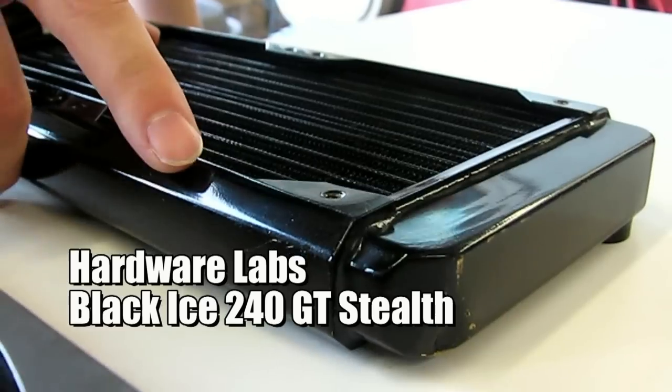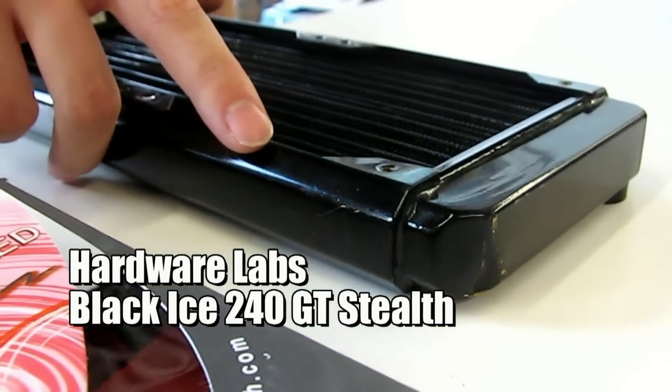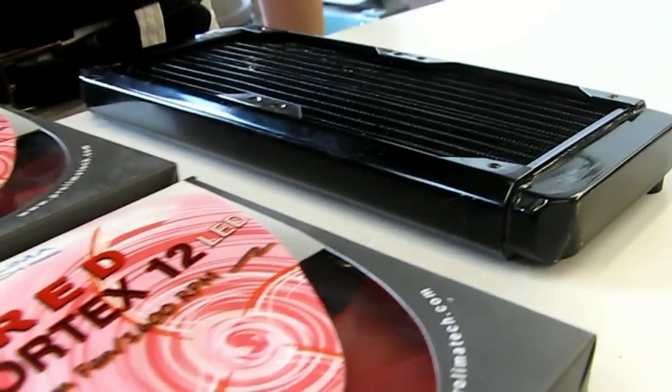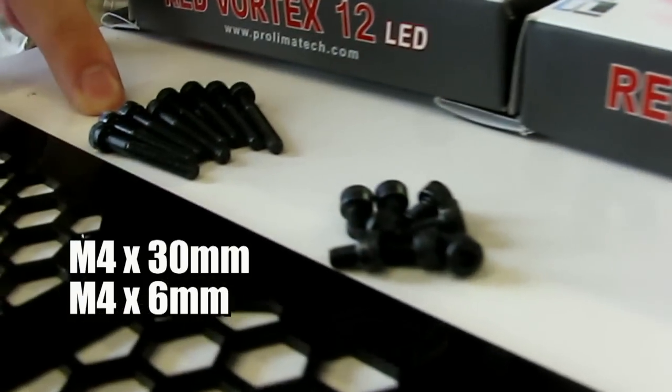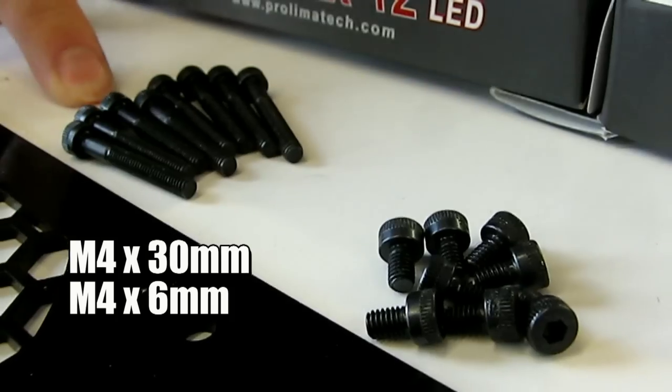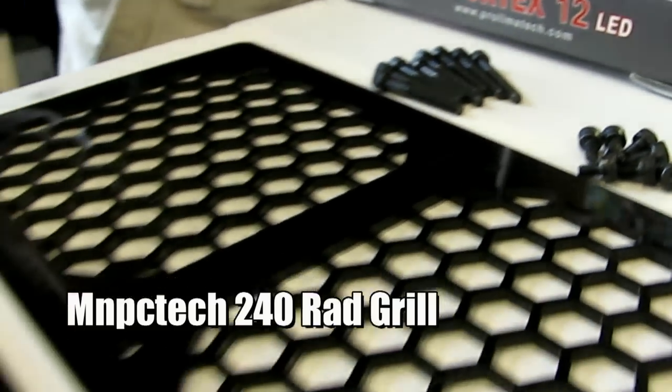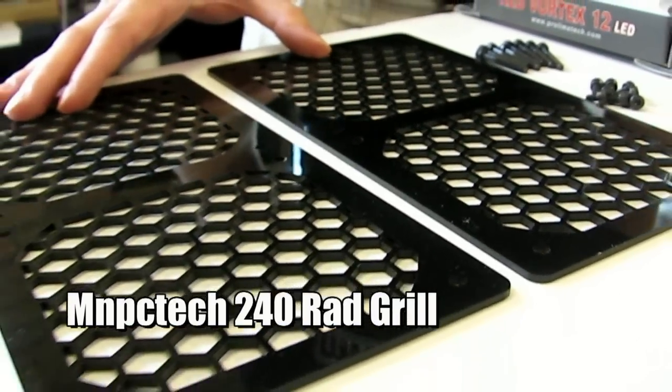For our install today we've got a 240 millimeter Black Ice GT Stealth radiator, a couple of 120 millimeter Prolimatech fans, socket head M4 threaded screws from MNPC Tech, and a couple MNPC Tech honeycomb radiator grills.